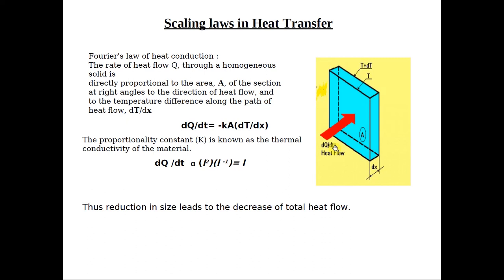Fourier's law of heat conduction says that the rate of heat flow through a homogeneous solid is directly proportional to the area of the section and to the temperature difference along the path of heat flow. The formula is dQ/dt equals minus k times A times dT/dx, where k is the thermal conductivity, A is the area, and dT/dx is the temperature gradient.